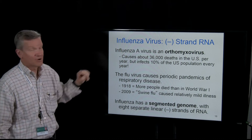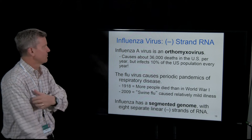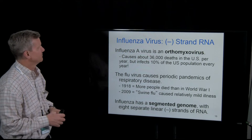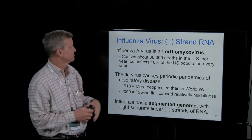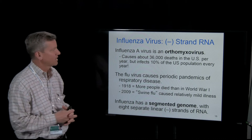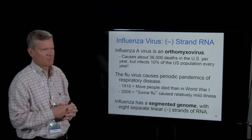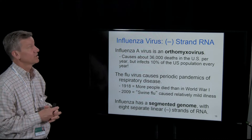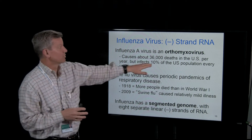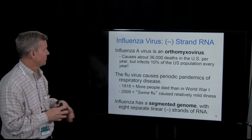Influenza A virus is the one we're talking about. There's A and B; A is the one we worry about every year. It's an orthomyxovirus — about 36,000 deaths per year in the U.S. — but it infects really about 10% of the population every year. The U.S. population is around 300 million, so that's a big number. Lots of people sick with influenza — obviously a big problem.